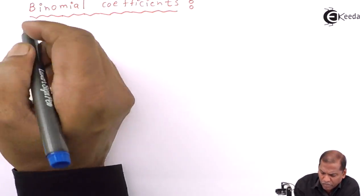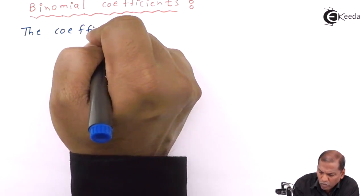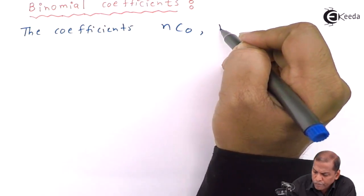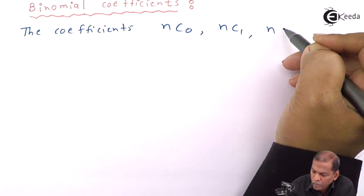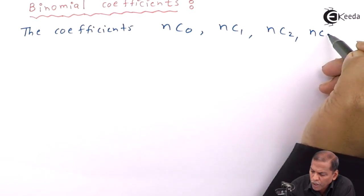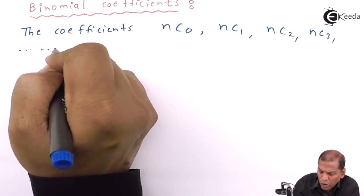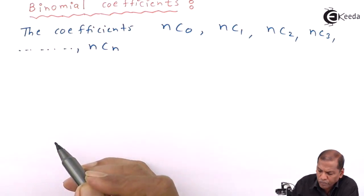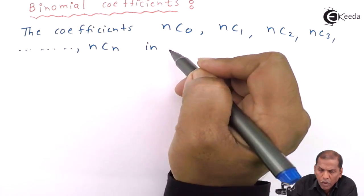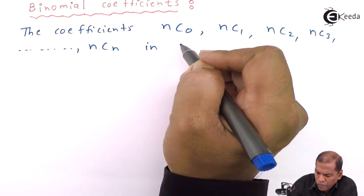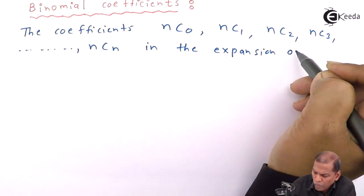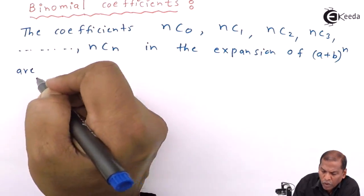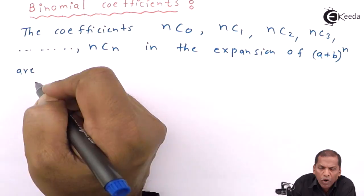The coefficients nC0, nC1, nC2, nC3, and so on, with the last term being nCn, in the expansion of (a+b)^n are called binomial coefficients of order n.